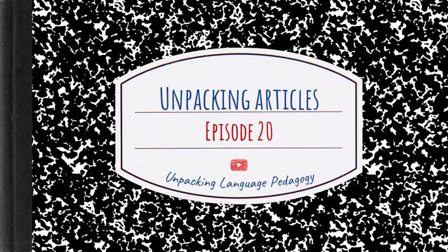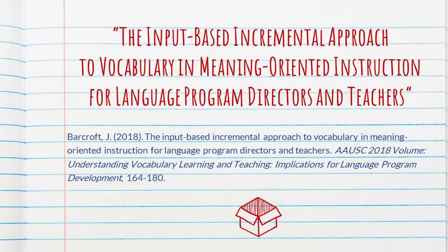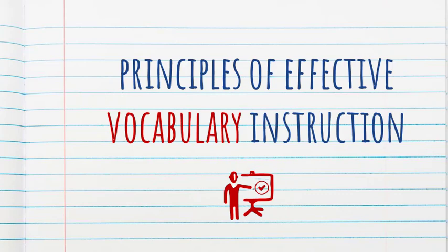Hello and welcome to episode 20 of Unpacking Articles. The article we're going to unpack today is called the Input-Based Incremental Approach to Vocabulary in Meaning-Oriented Instruction for Language Program Directors and Teachers. This article is actually a chapter in a volume and is a very summarized version of the IBI approach that Joe Barcroft has proposed and written books about. He is essentially giving us some principles of effective vocabulary instruction — things that we should keep in mind when we are teaching vocabulary.